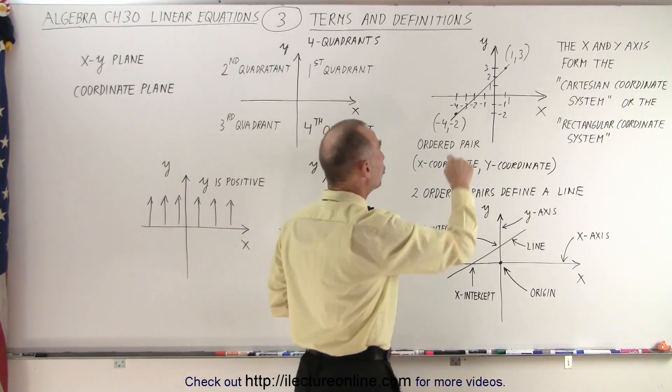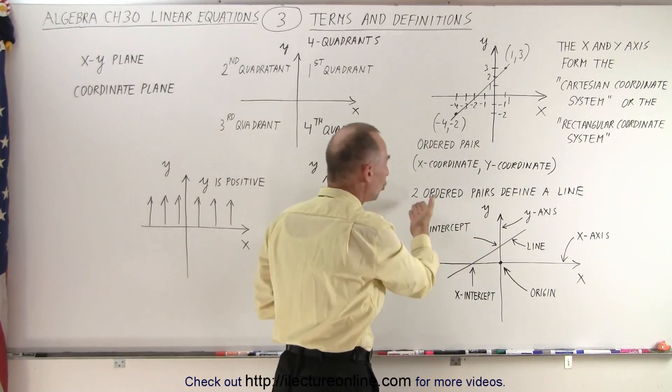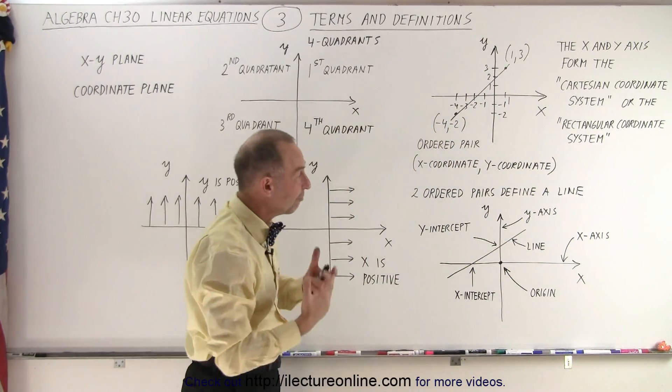Now notice that if you have two ordered pairs and you connect them, that forms a line. So two ordered pairs, in essence, define a line.